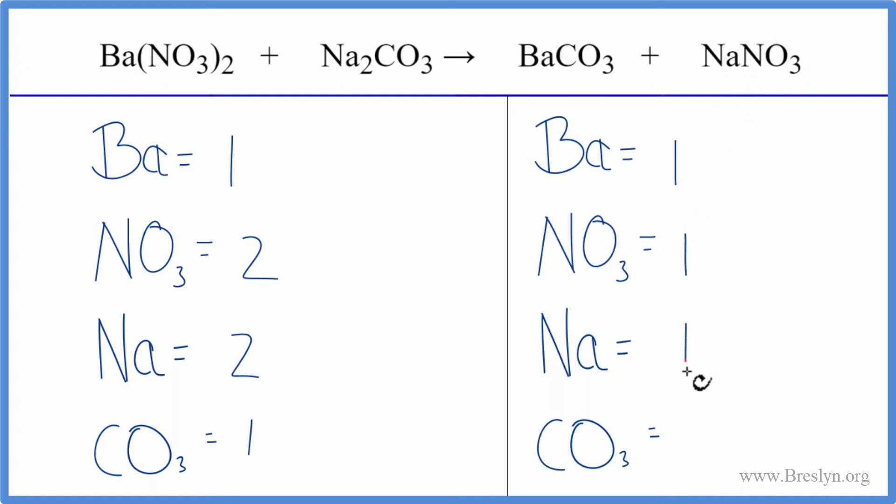We can see that we need to double our nitrates. Let's put a two in front of the sodium nitrate, so we have one nitrate times two—that's balanced. Then we have one sodium times two, so we have two sodium atoms. Those are balanced, and we're done. This equation is balanced.